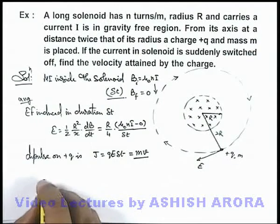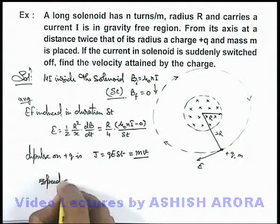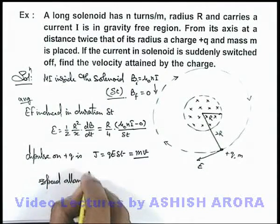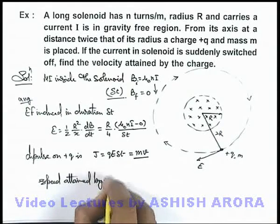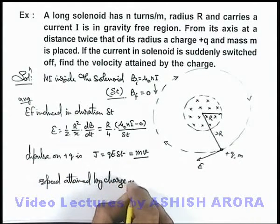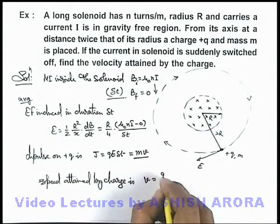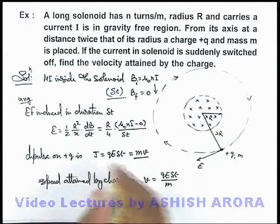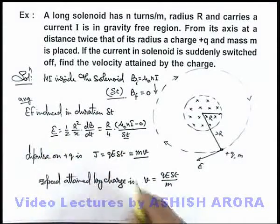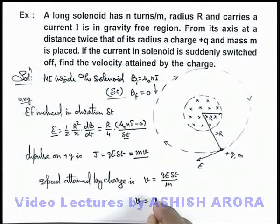So in this situation we can directly write speed attained by charge is v equals qEΔt by m. And here the value of EΔt we can substitute, so this will be q by m multiplied by...